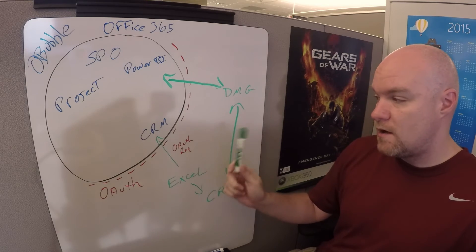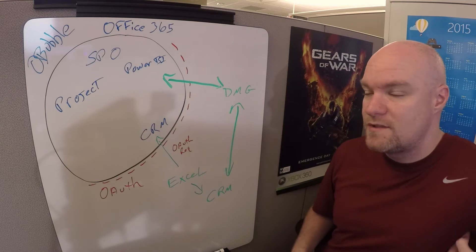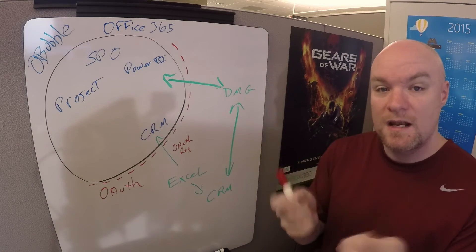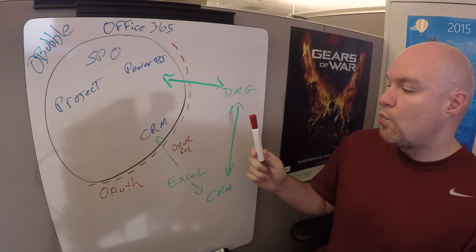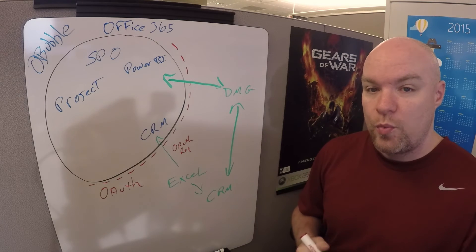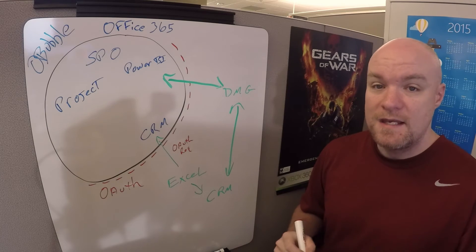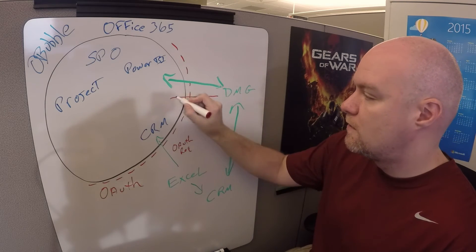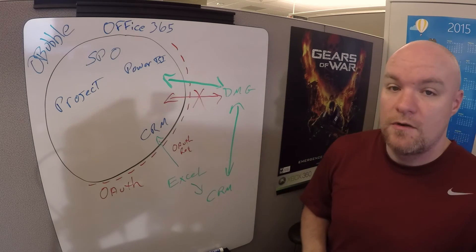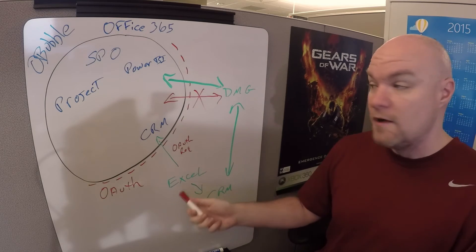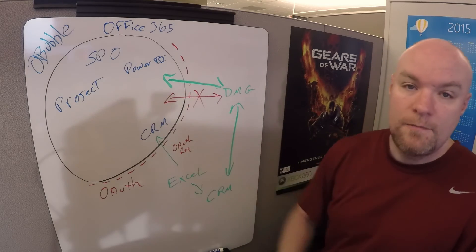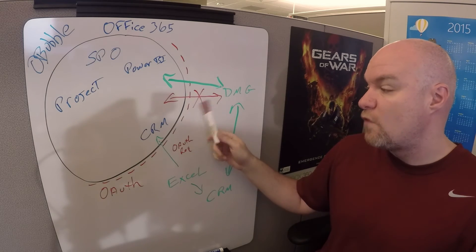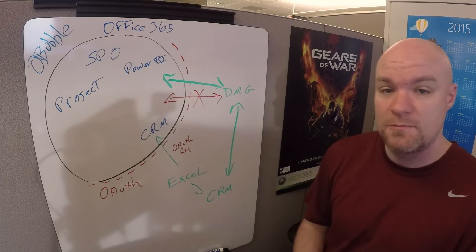Now let's look at trying to get data from CRM Online, which is inside the O365 bubble — and this is where we get into trouble. When we go to do the scheduled data refresh, it sets up the data source for us within the Power BI Admin Center. When we go to configure the authentication, the problem is that the only options available are Windows authentication or anonymous — there is no OAuth selection. So that will not work, and you're not going to be able to refresh your data. You can pull it into an Excel workbook or Power BI Designer, publish it to Power BI, and reports will work great because the data is in the local model. But the minute you try to refresh using the Data Management Gateway, you're going to have a problem.